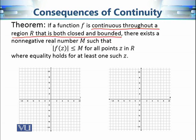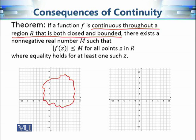This statement says that if the assumption is true, we can find a number M which will be the bound of the modulus of the functional values. The function will be bounded by this number M. The proof is not very complicated but the consequences are important. Let's recall: closed means whatever the region R is, the boundary is included — all boundary points are included in that region.